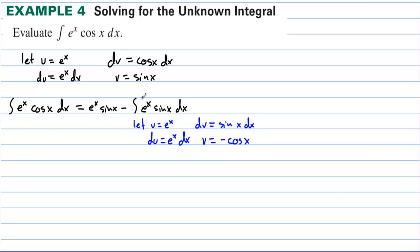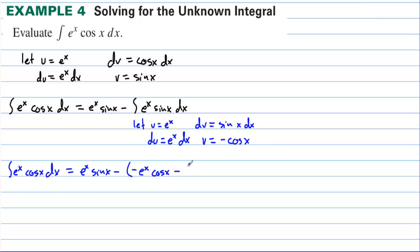Bringing down everything except the integral: the integral of eˣ·cosine(x) dx equals eˣ·sine(x) minus u times v, which is negative eˣ·cosine(x), minus the integral of v du, which is negative eˣ·cosine(x) dx.